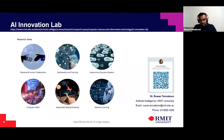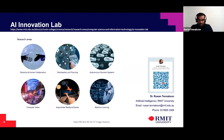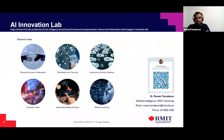That is mainly what I wanted to share with you all. I am part of the AI Innovation Lab at RMIT, which was recently established and conducts research across six themes: robotics, optimization, autonomous systems, computer vision, augmented reality, and machine learning. I sit within the computer vision theme. Thank you very much — I'm happy to answer any questions.